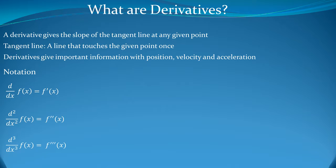And for the third derivative, we have d³ over dx³ of f(x), which equals f triple prime of x. And from then on, you use Roman numerals in parentheses for higher-order derivatives.